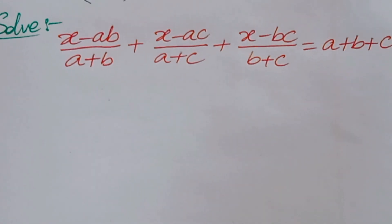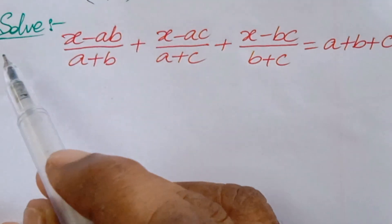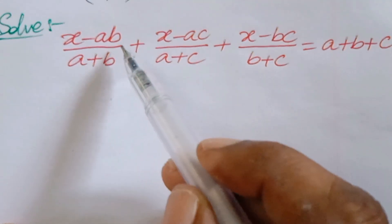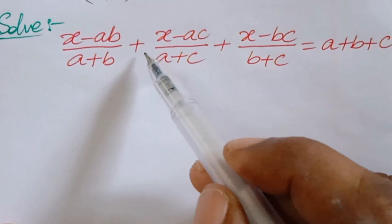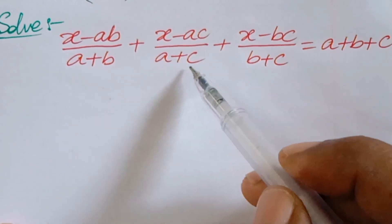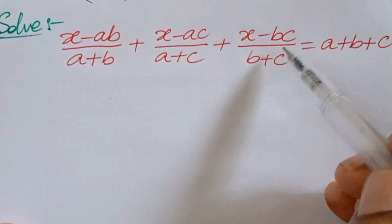Welcome back to Ion CGMax. Today we are looking at a logical question. The question is: solve (x - ab)/(a + b) + (x - ac)/(a + c) + (x - bc)/(b + c) = a + b + c.